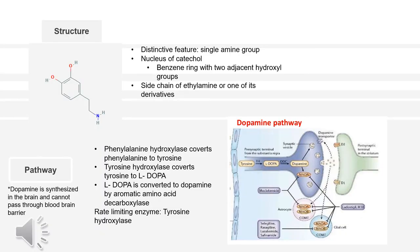As for the structure of dopamine, it is an organic chemical of the catecholamine and phenethylamine families. Dopamine constitutes about 80% of the catecholamine content in the brain. It is an amine synthesized by removing a carboxyl group from its precursor, L-DOPA. L-DOPA is synthesized in the brain and kidneys. Dopamine is synthesized in the brain itself because it cannot pass through the blood-brain barrier; instead, L-DOPA passes into the brain from the blood and is synthesized into dopamine and other catecholamines.